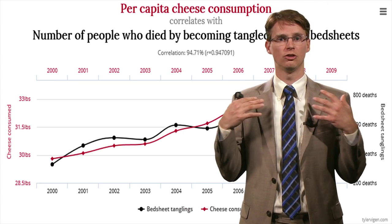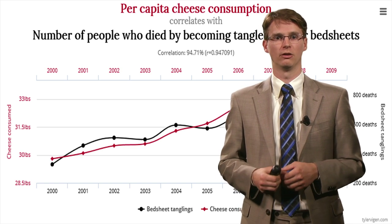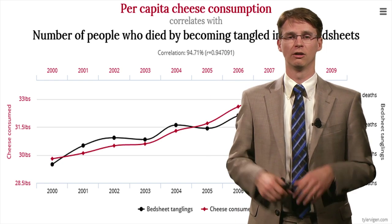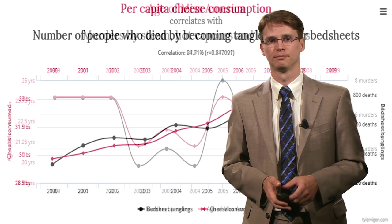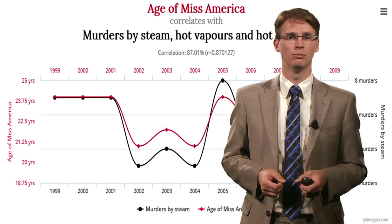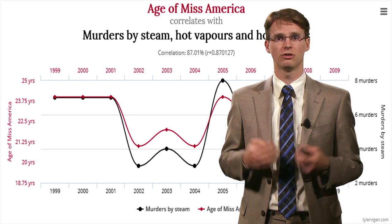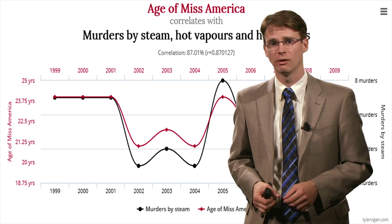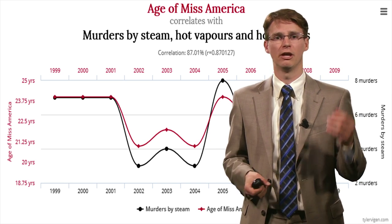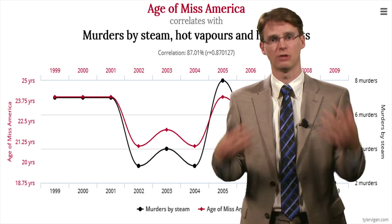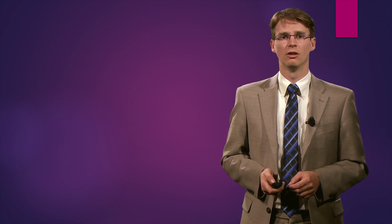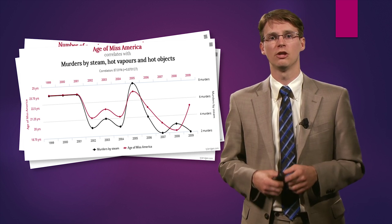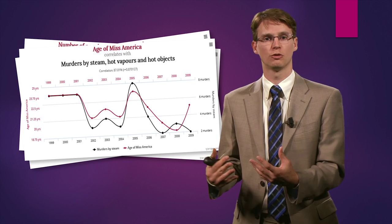A similar example is the relationship between cheese consumption and the number of people who die by becoming tangled in their bedsheets — there's absolutely no causal relationship. Likewise, the age of Miss America is highly correlated with murders by steam, hot vapors, and hot objects. In all three examples, we observe a very strong relationship, but we cannot conclude it's causal because it's spurious — based on coincidence.